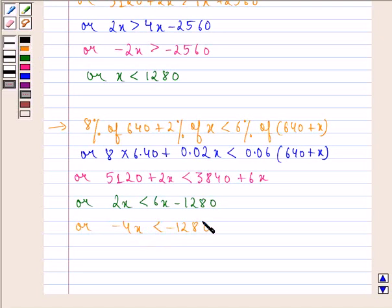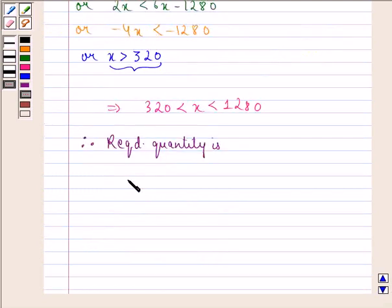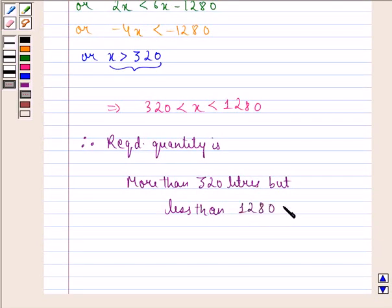So from the solutions of inequalities 1 and 2, we conclude that 320 is strictly less than x which is strictly less than 1280. Therefore, required quantity is more than 320 liters but less than 1280 liters, and this is our answer to this question. I hope you understood the question and enjoyed the session. Have a good day.